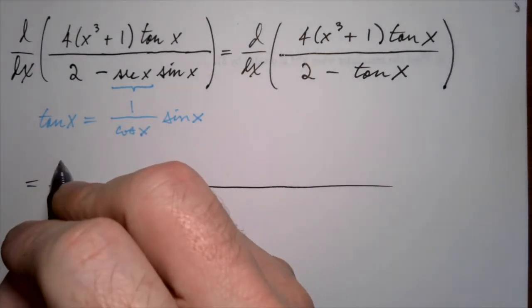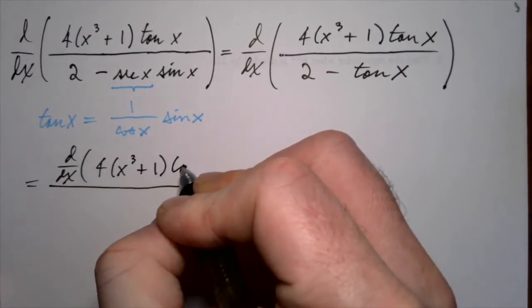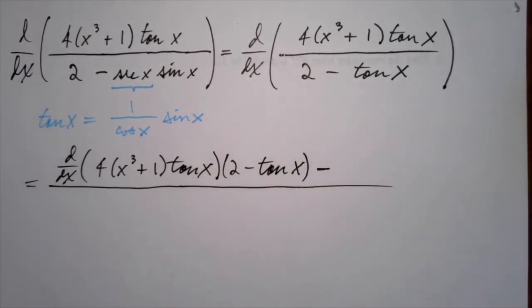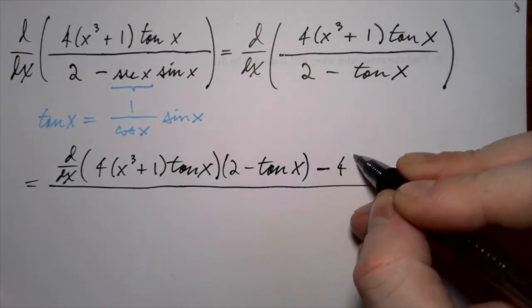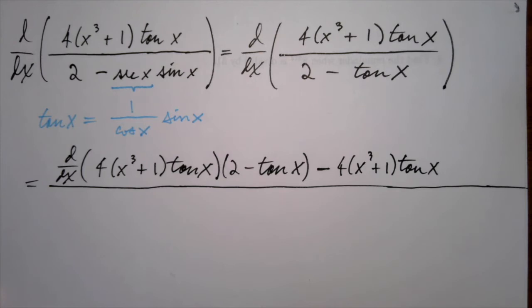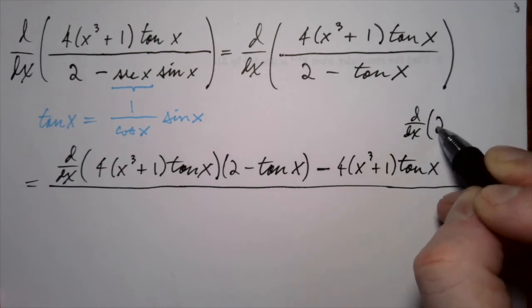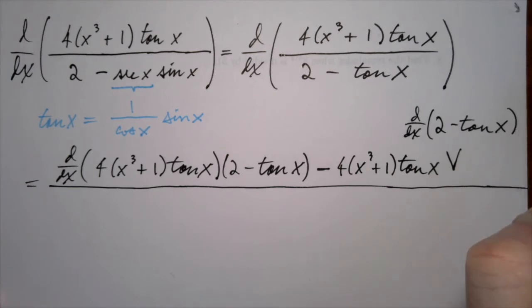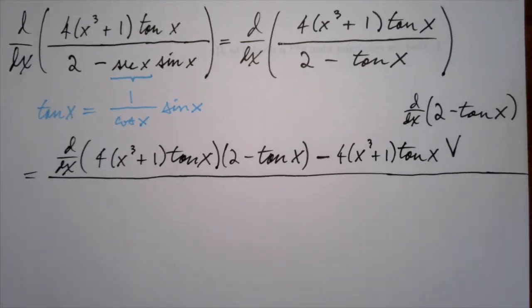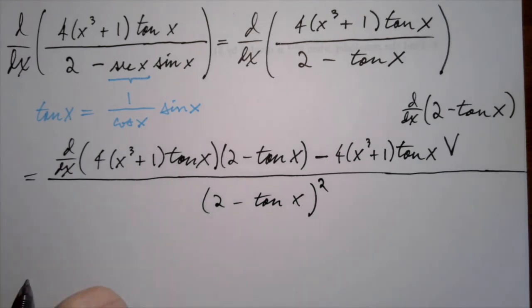We'll have the derivative of the top. So the derivative of 4 times x cubed plus 1 times tangent of x times the bottom. That's 2 minus tangent of x minus that all-important minus sign. Can't forget that. The top, that's 4x cubed plus 1 times tangent of x times the derivative of the bottom. Now I don't want to try to squeeze that in, so I'm going to write it this way to make sure that I have room. And that I can stay legible. I want to be able to read what I'm doing to check my work, make sure everything is correct. Downstairs, we just take what we had and we square it. That's always what you do in the quotient rule.